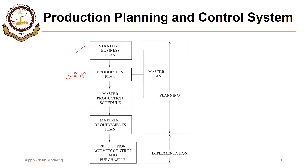As we saw in the previous slides, there are two major outputs of the sales and operations planning process: one is the production plan or operations plan, and the other is the sales management. This production plan then serves as an input to the master production schedule, or MPS.